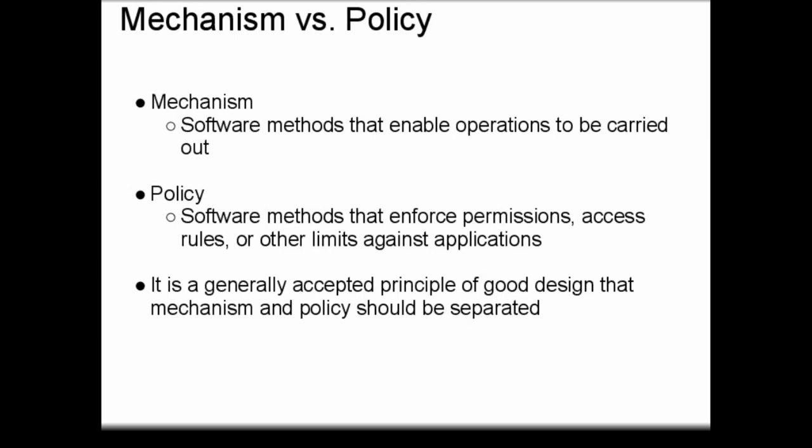Policy, on the other hand, is a set of software methods that enforce permissions, access rules, or other limits against applications. So a policy, for example, would be something that said that only users who met certain criteria could send a message out to a hardware device to blink a light, enable a camera, or perform some other hardware function. It's a generally accepted principle of good design that mechanism and policy should be separated as much as possible.